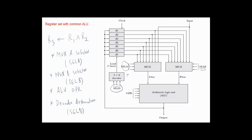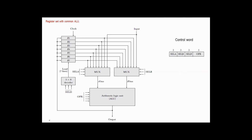In this example, Select A is for R1, Select B is for R2, the operation code is for the AND operation, and the decoder select is for register R3. These four control selection variables are generated in the control unit and must be applied to the proper selection inputs. Selection lines are combined into one word called the control word, and the size of the control word is 14 bits: three for Select A, three for Select B, three for Select D, and five bits for the operation code. The 14-bit control word specifies a particular micro-operation.